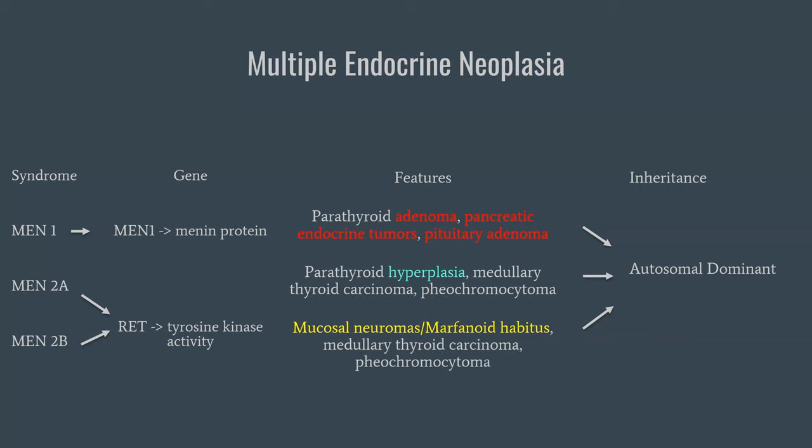All three MEN syndromes are inherited in an autosomal dominant fashion. So if you see a primary family member, especially a parent, with one of these syndromes on a test question, it's essentially guaranteed that the patient will have this syndrome. It's a huge hint when they give you a family member that's affected.